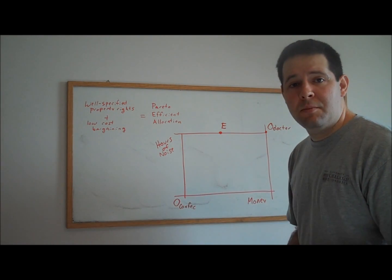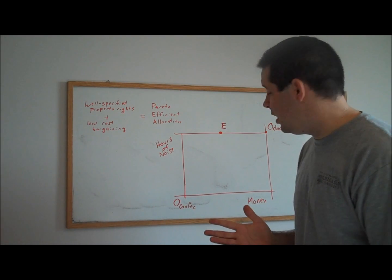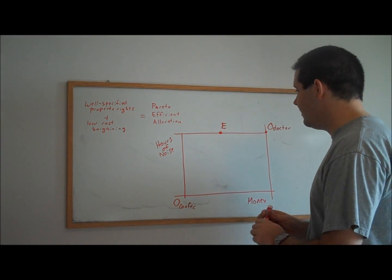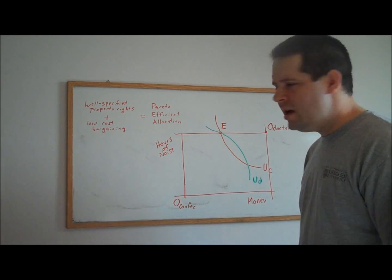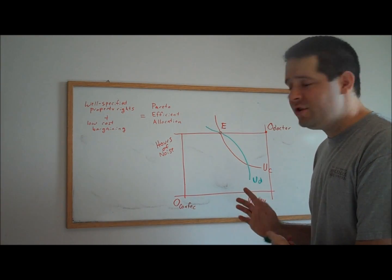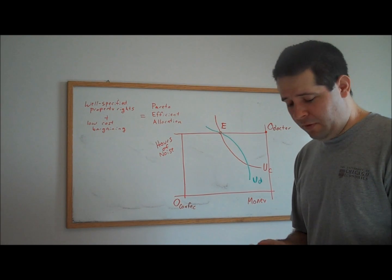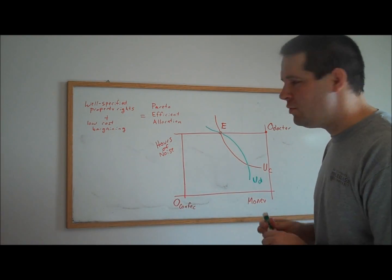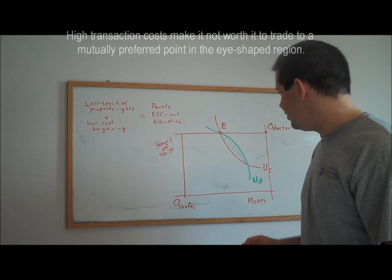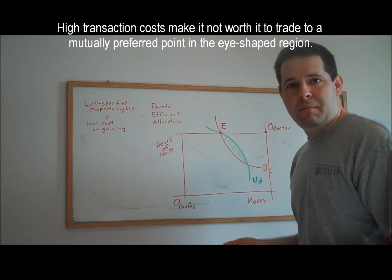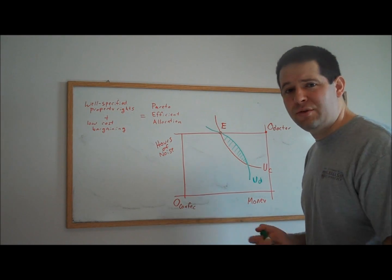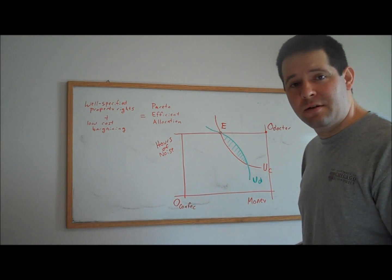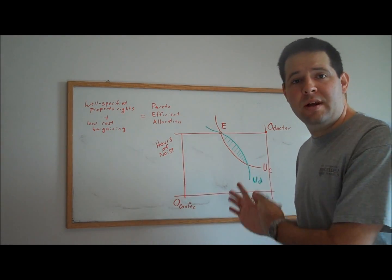And so through this endowment point, just like any endowment economy, we get an indifference curve for the confectioner, and we get an indifference curve for the doctor. This allocation E is not a Pareto-efficient allocation because there are mutually preferred bundles in this I-shaped region. If there are high transaction costs, we'll just make use of all of the noise that he can possibly make use of. There won't be any transfer because it's too costly for the two parties to get together to transfer, and this is Pareto-inefficient.